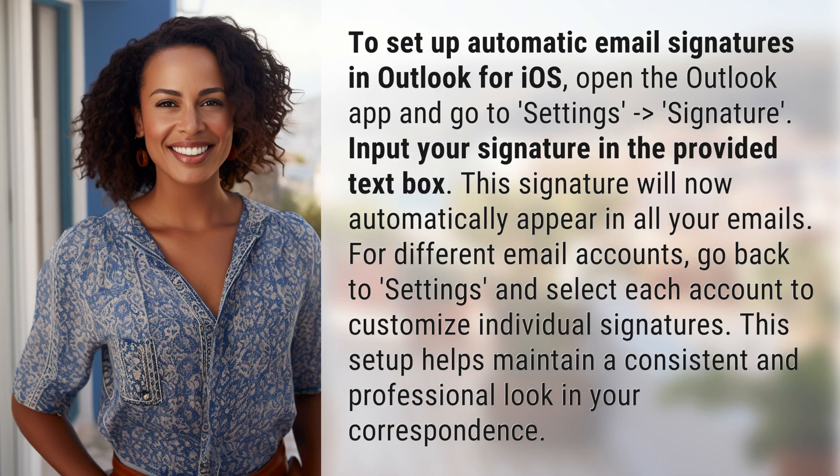To set up automatic email signatures in Outlook for iOS, open the Outlook app and go to Settings to Signature. Input your signature in the provided text box. This signature will now automatically appear in all your emails.